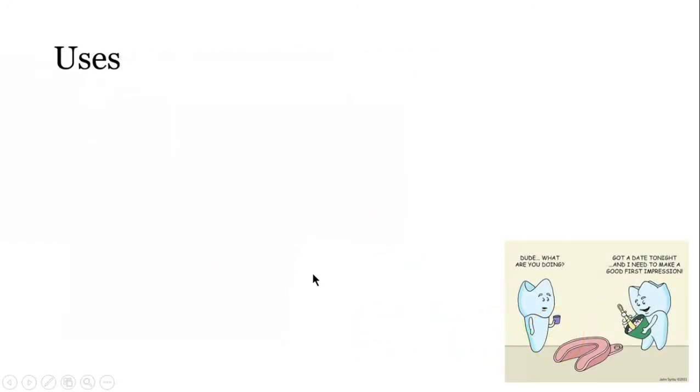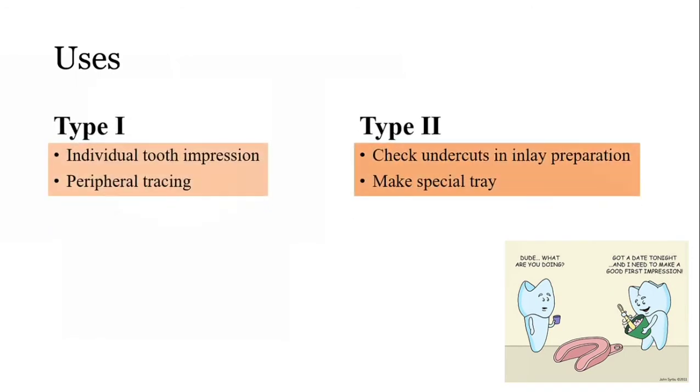Apart from being used in primary impressions, Type 1 can also be used in taking individual tooth impressions and in peripheral tracing. Type 2 can be used to check undercuts in inlay preparation and for making special trays.